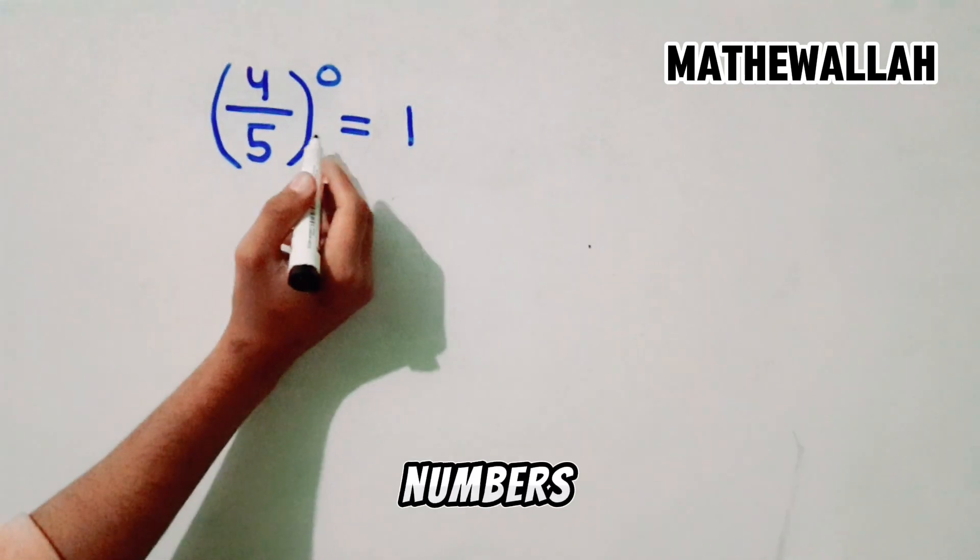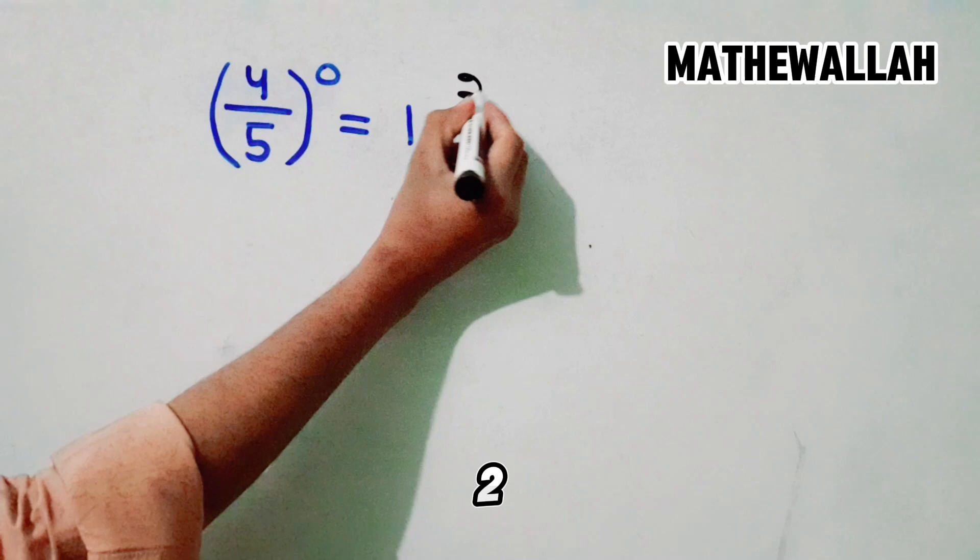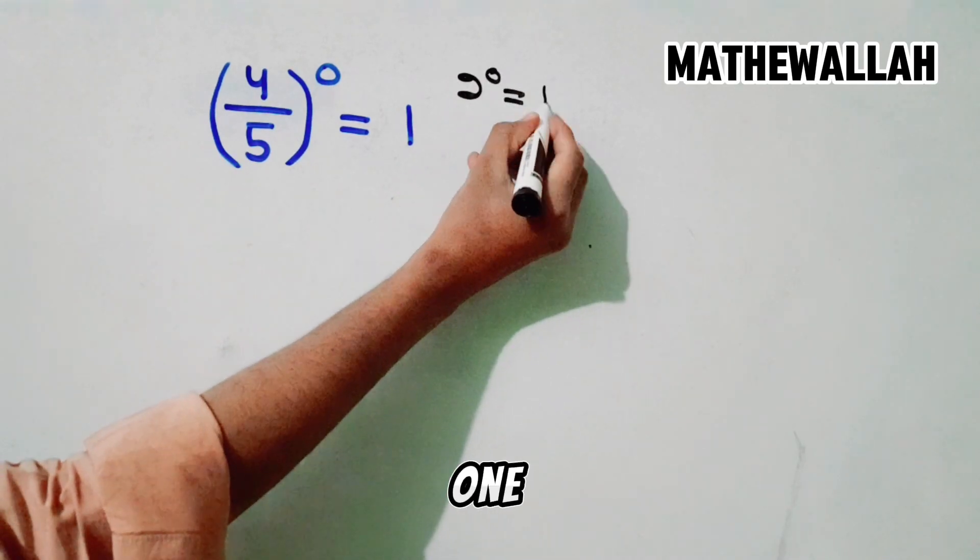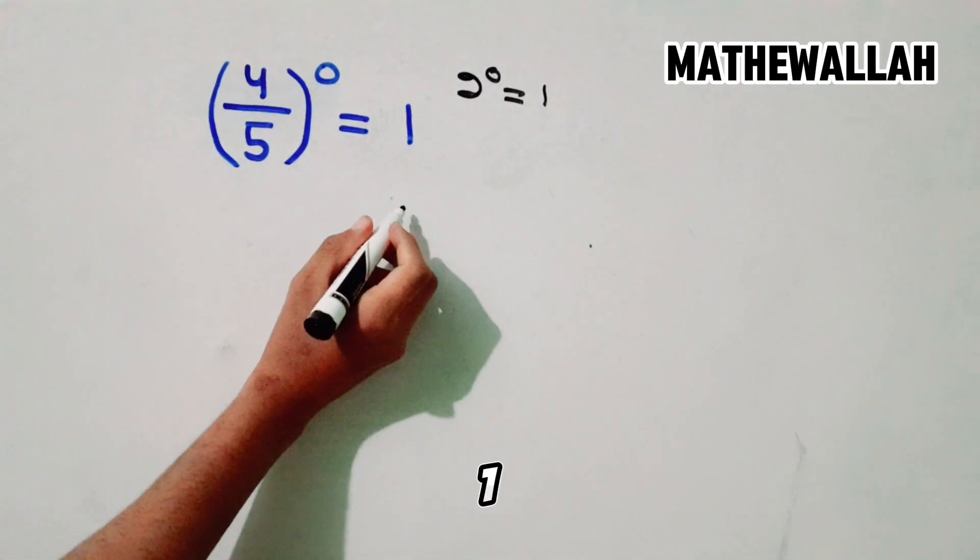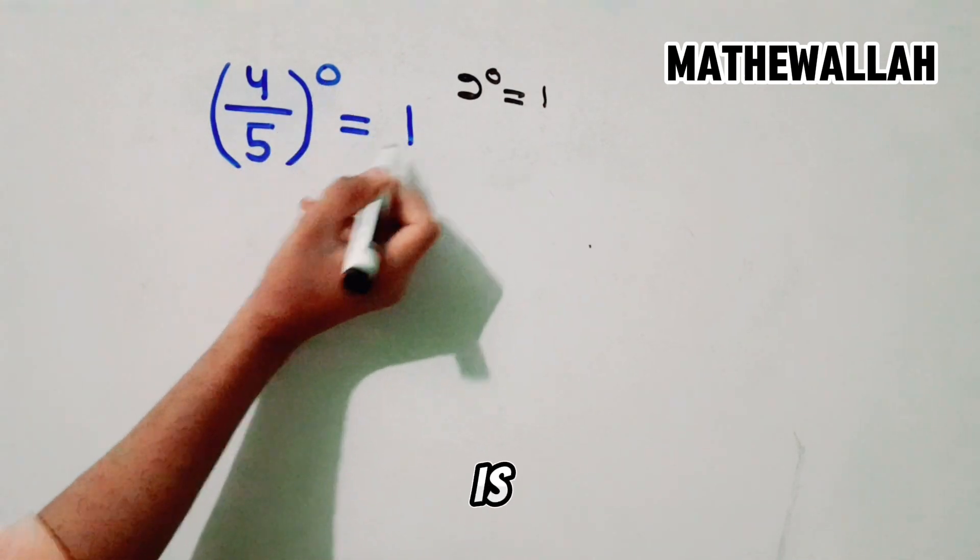Why? Any number's power 0 is equal to 1. That's 2 power 0 is equal to 1. So why we write 2 power 0 is equal to 1. So today we are going to prove that any number power 0 is equal to 1.